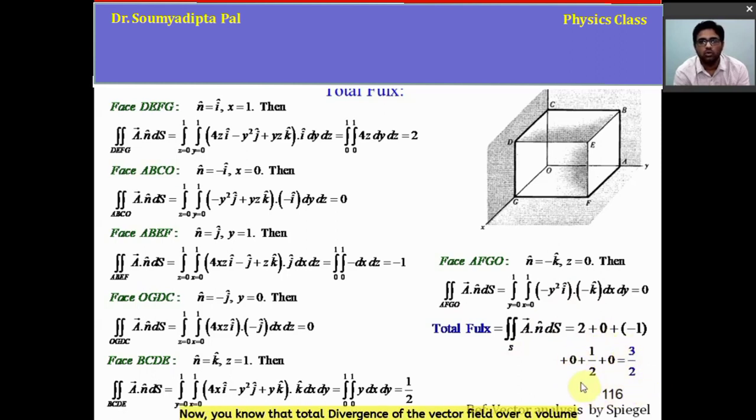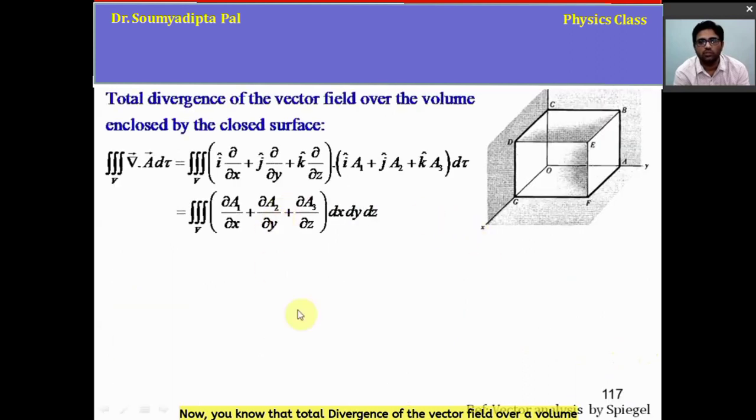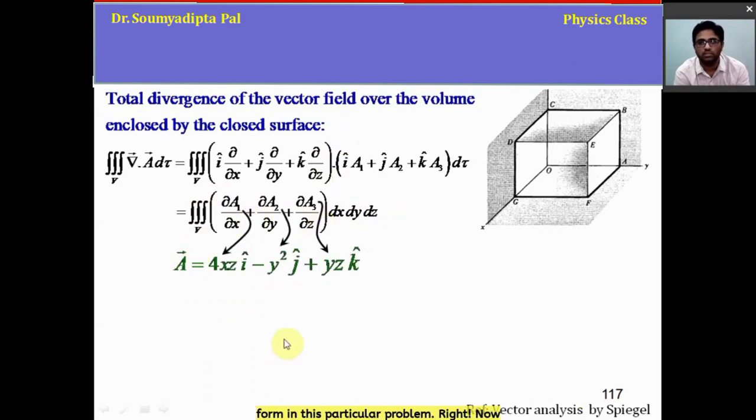Now you know the total divergence of the vector field over a volume enclosed by the closed surface is of this form. Here A1, A2, A3 are different components of vector A, which is of this form in this particular problem. Now if we apply divergence on this vector field,